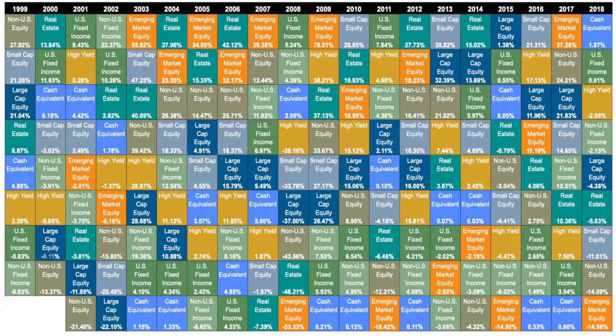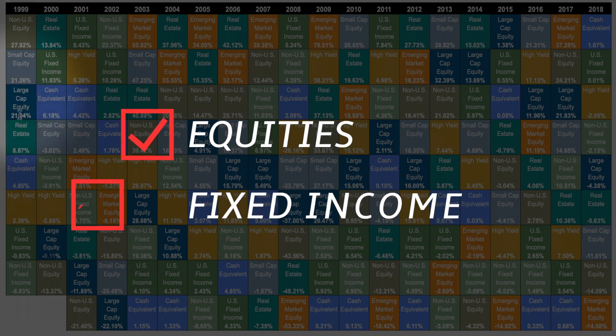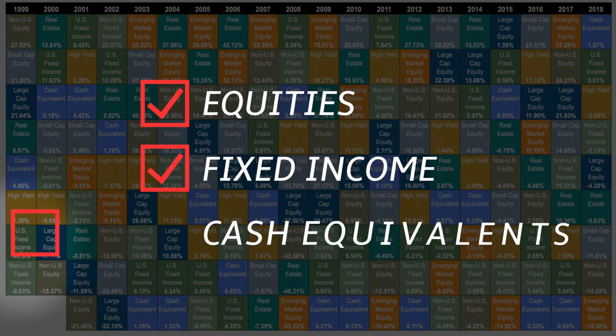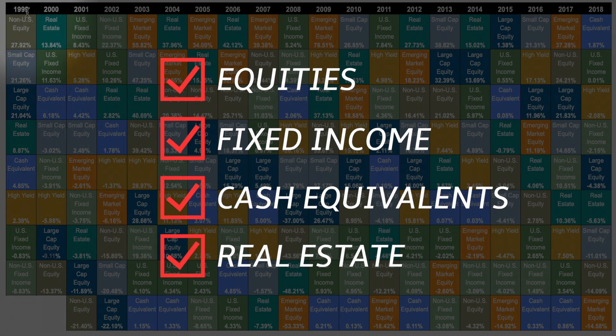Let's look at the Kellan Periodic Table of Investment Returns to understand the theory better. As you can see, the chart depicts the annual rate of return for each of the four asset classes: equities, fixed income, cash equivalents, and real estate.